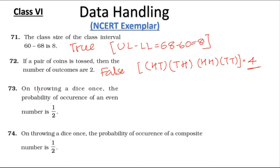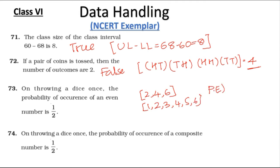Question 73: On throwing a dice once, the probability of occurrence of even numbers is 1 by 2. The even numbers are 2, 4, and 6 — three even numbers. The total number of outcomes is 6, so the probability is 3 out of 6, which is 1 by 2. So the given statement is true.